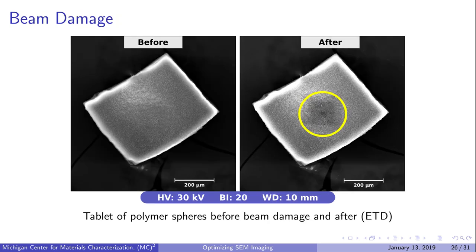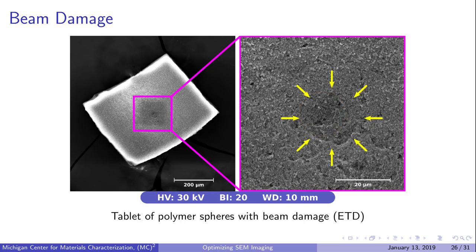Here is an example of beam damage on a tablet of polymer spheres. The before and after pictures show beam damage as a crater in the center of the tablet, and zooming in we can see the crater more clearly.